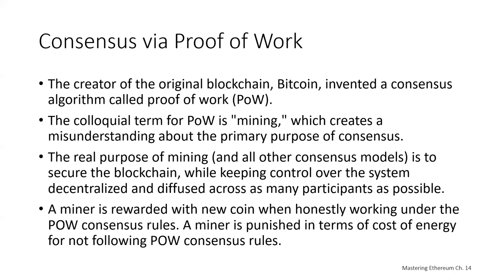Satoshi Nakamoto, the creator of the original Bitcoin blockchain, invented a consensus algorithm called proof of work. Proof of work is arguably the most important invention underneath Bitcoin. The term we normally use for Bitcoin's proof of work is mining, which is somewhat of a misunderstanding of the primary purpose of consensus. People often assume that the purpose of mining is the creation of new currency, just like real-world mining extracts metals from the ground. Instead, the real purpose of mining is to secure the blockchain while keeping control decentralized. The reward of newly minted Bitcoins is an incentive to those who contribute to security — a means to an end.